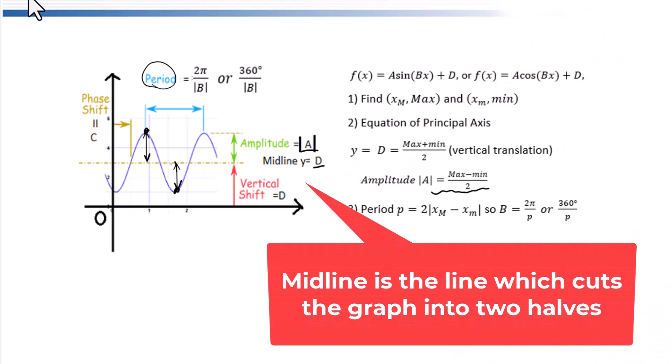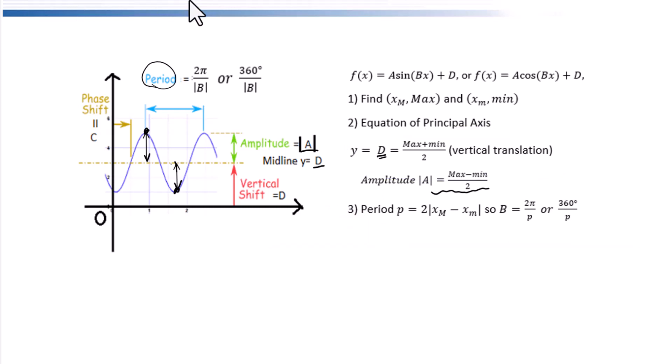Midline is the vertical midpoint between maximum and minimum. D equals maximum plus minimum over 2. We know the period equals the distance between two consecutive maximum points or two consecutive minimum points. Therefore, the horizontal distance between maximum and minimum points will be half the period.